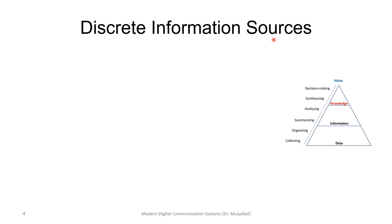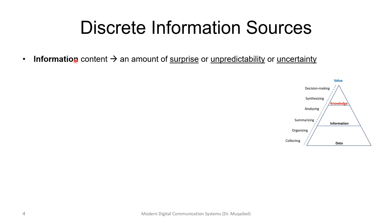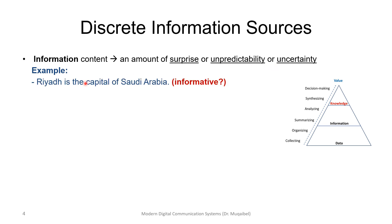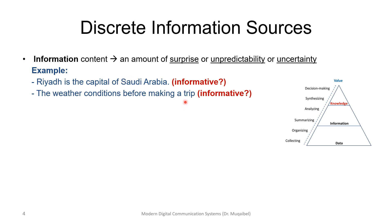So what is a discrete information source? It is an information source that produces discrete possible outcomes. Information content is a measure of the amount of surprise, unpredictability, or uncertainty. When I give you information I am trying to answer your uncertainty. For example, if somebody says 'Riyadh is the capital of Saudi Arabia,' that may not be very informative if you already know it. But a detailed weather forecast before a trip could be very informative — it adds to your knowledge.